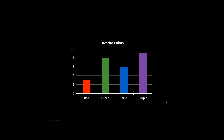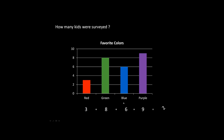Another typical question: how many kids were surveyed? That means how many kids total were asked about favorite colors. We know all the totals: three, eight, six, and nine. To find the total of how many kids were surveyed, we add. Three plus eight plus six plus nine — nine plus six is fifteen, plus eight is twenty-three, plus three is twenty-six. So altogether there were twenty-six kids surveyed.